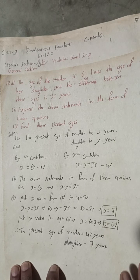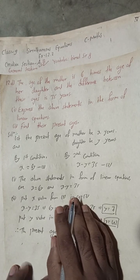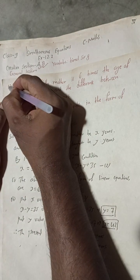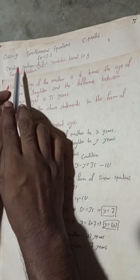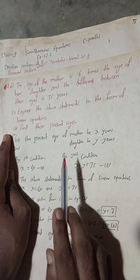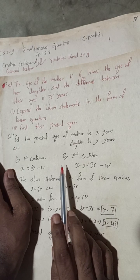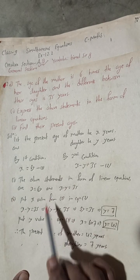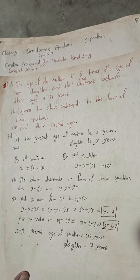This is question number 2D. All numbers of creative section A and B from question 3 onwards are uploaded in my YouTube channel — you can check the playlist. Solutions up to class 12 have been uploaded, and a lot of science and math tricks are available there.